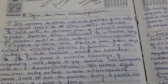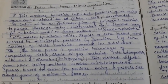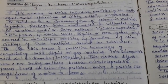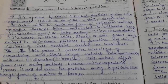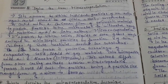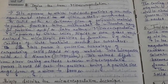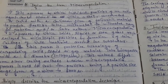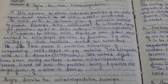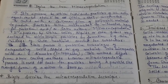Define the term microencapsulation. It is the process by which individual particles of an active agent can be stored within a cell surrounded or coated with a continuous film of polymeric material to produce particles in a micrometer to millimeter range for protection and/or later release. Microencapsulation is a process by which solid, liquids, or even gases may be enclosed in microscopic particles by formation of a thin coating of wall material around the substance.